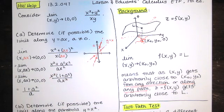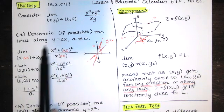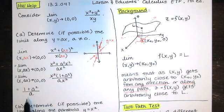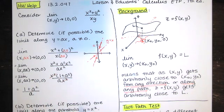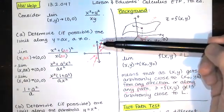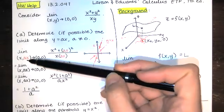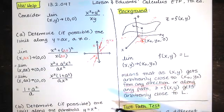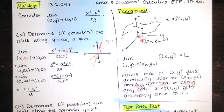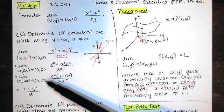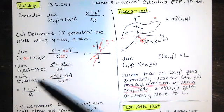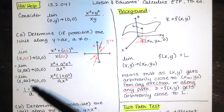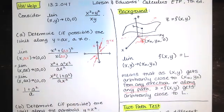Along y = x (a = 1), we get (1 + 1)/1 = 2. When a = 3, we get (1 + 9)/3 = 10/3. So we get all these different limits for different values of a — and that alone, by the two-path test, is enough to say the limit does not exist, because we get different values for different a. The key technique is: replace y with ax, get 0/0, then factor and reduce. Factor out that x², reduce, and what's left is a continuous constant, so the limit is just that constant.